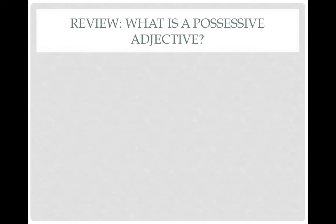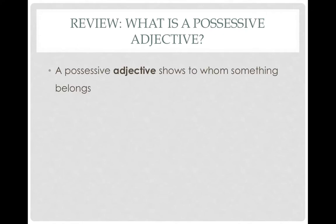This should hopefully sound familiar from French 1 last year. A possessive adjective shows to whom something belongs. That's why we have the word possessive here — not because it's somebody who's crazy jealous or something, but because it's showing possession. The ones we learned for 'my' would be mon, ma, or mes.